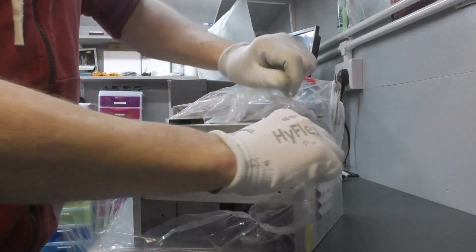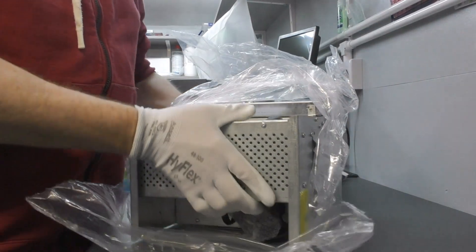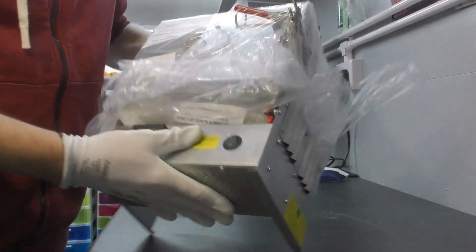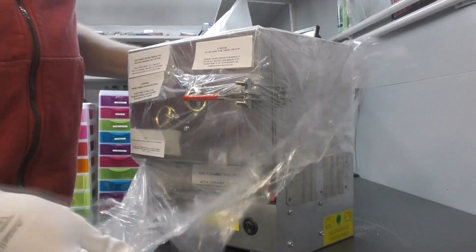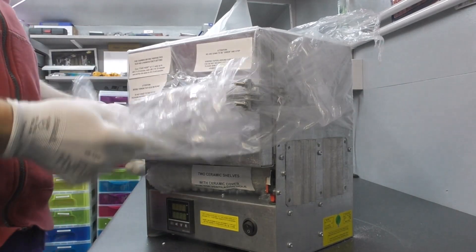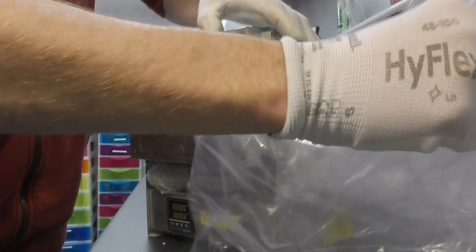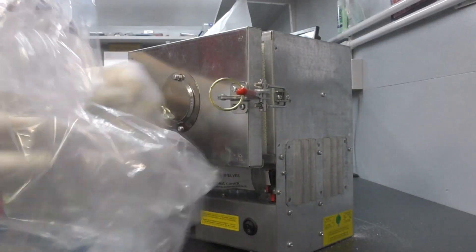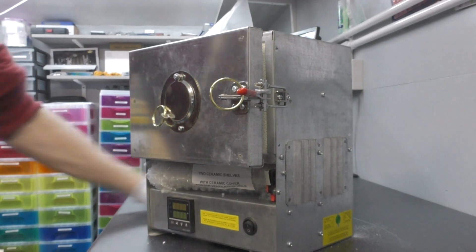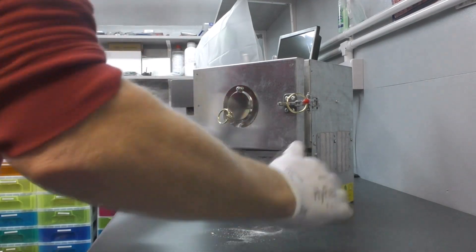This particular kiln will go up to a thousand degrees centigrade. Silver solder obviously is lower than that, so it's certainly capable of doing it. And obviously it can be used for many other crafting purposes - glass, ceramics, all sorts.